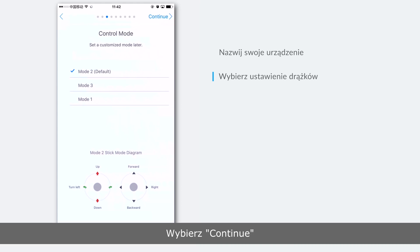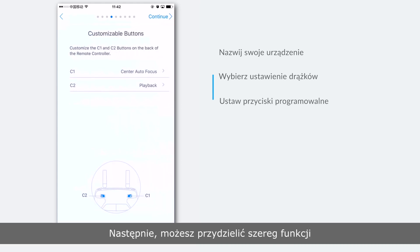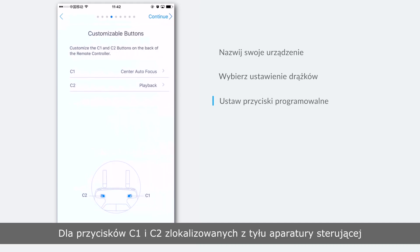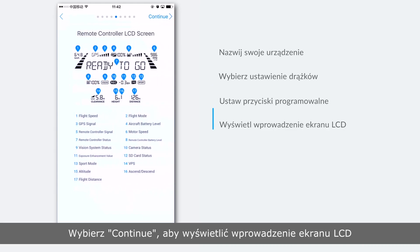Tap continue. You can assign various commands to the C1 button and C2 button on the back of the remote controller. Tap continue to view an LCD screen introduction.